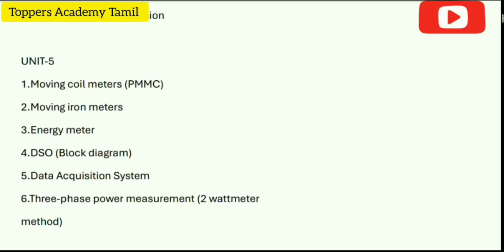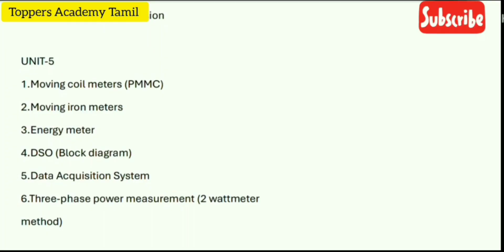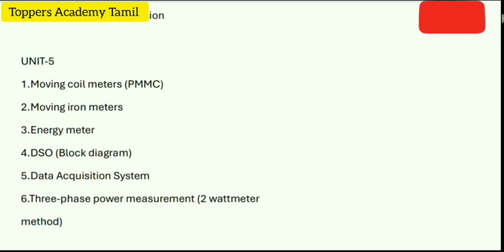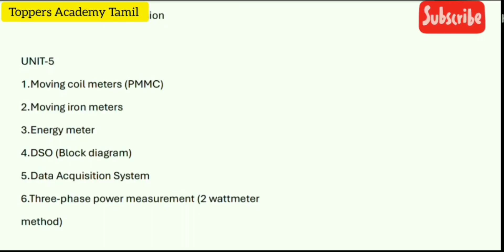Unit 5 important questions: First one: Moving Coil Meters (PMMC). Second one: Moving Iron Meters. Third one: Energy Meters. Fourth one: DSOD block diagram. Fifth one: Data Acquisition System. Sixth one: Three Phase Power Measurement — Two Watt Meter Method. If you look at these six questions, you will be able to attend the unit fully.